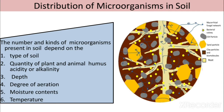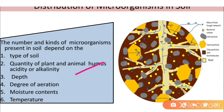First, let's look at the distribution of microorganisms in soil. The number and kind of microorganisms present in soil totally depends on the type of soil, quantity of plants, animals, humus, acidity or alkalinity, depth of the soil, degree of aeration, moisture content, and temperature.